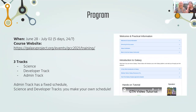The program for this week you can find on the course website that is linked here, and you should have gotten an email with this too. We have three tracks: a science track, a developer track — if you want to work on developing components or tools for Galaxy — and an administration track, if you want to run your own Galaxy server.